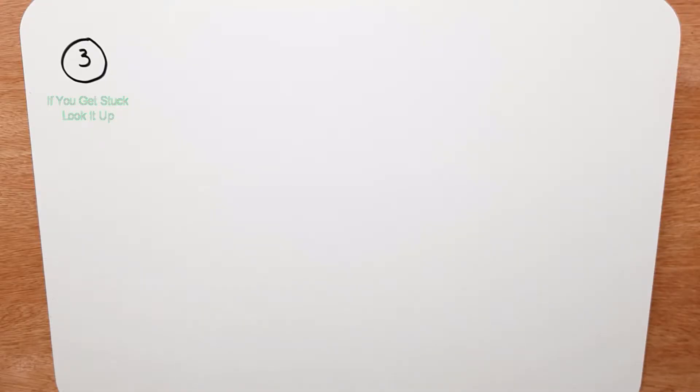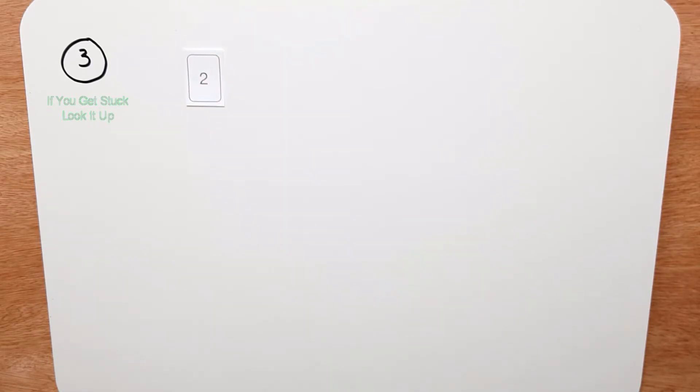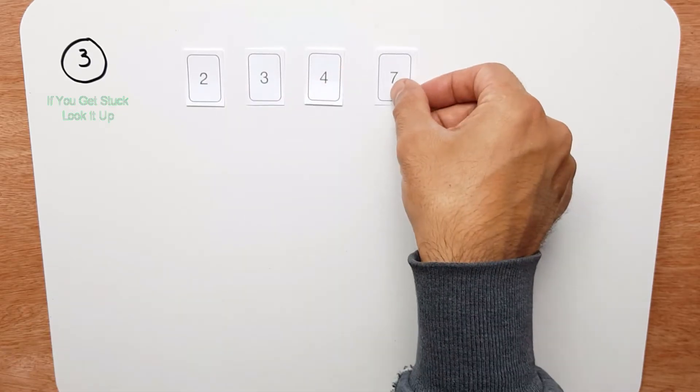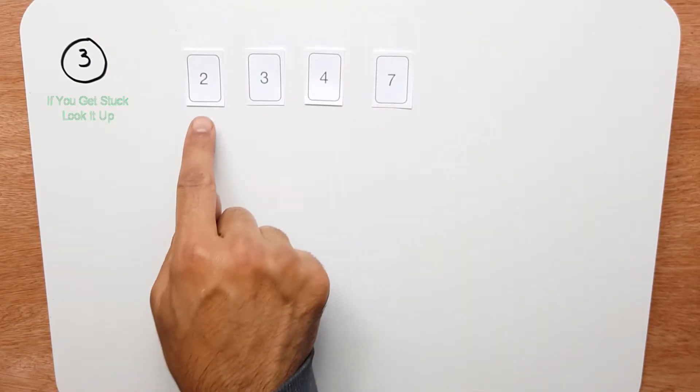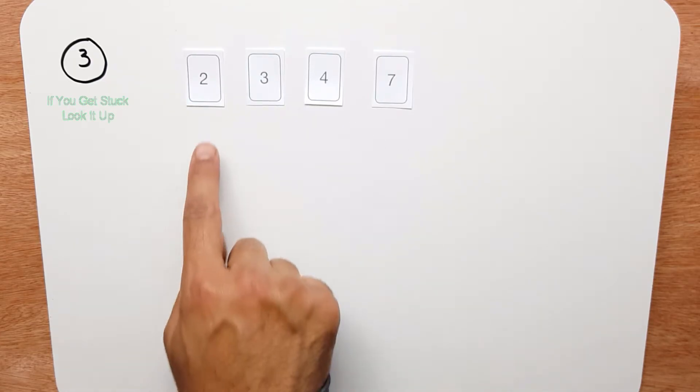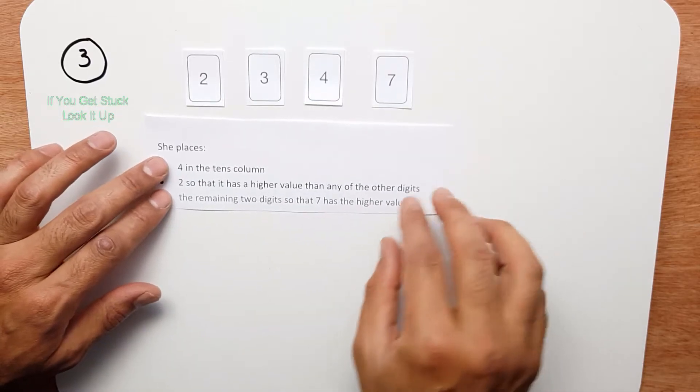In question 3, we're given four cards with the digits 2, 3, 4, and 7. Lila places these in order according to the instructions provided.